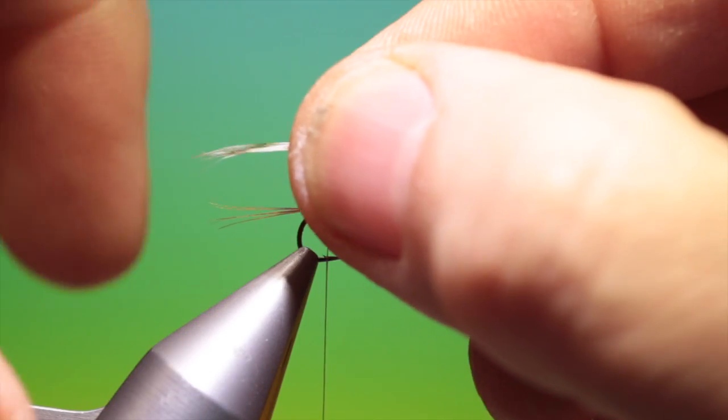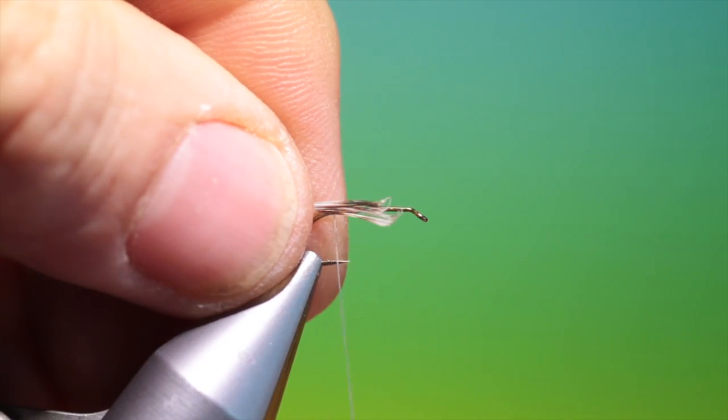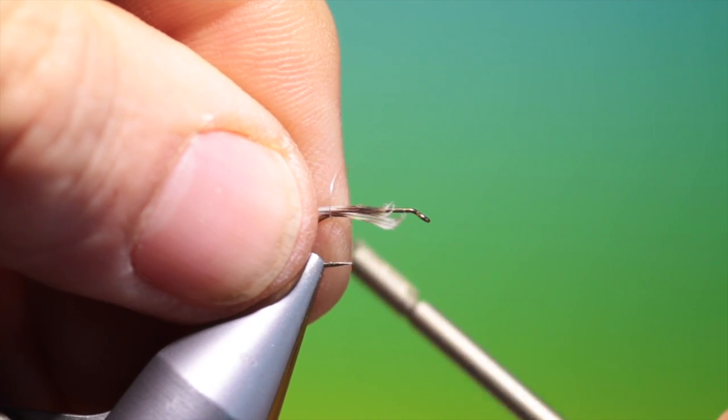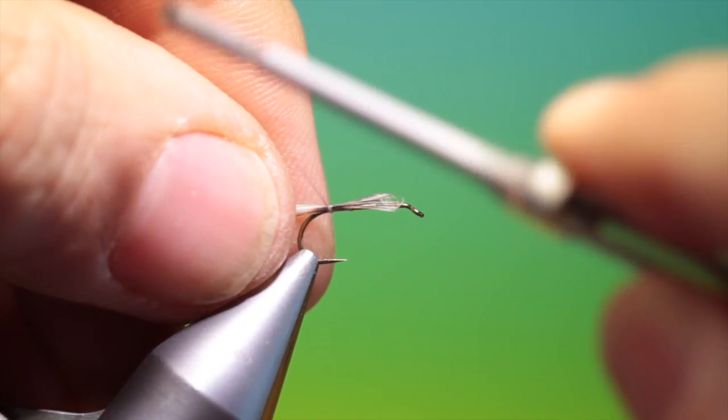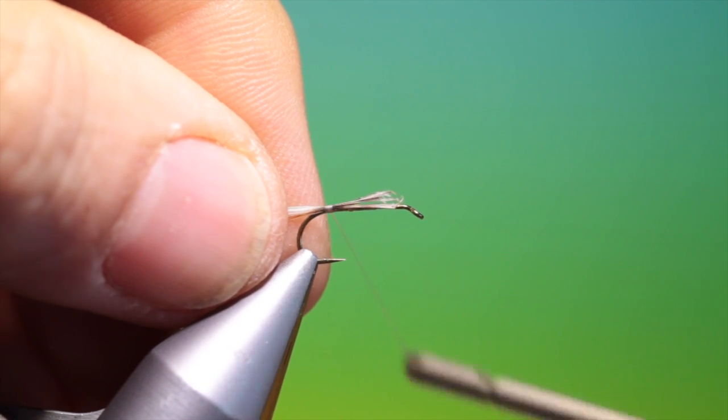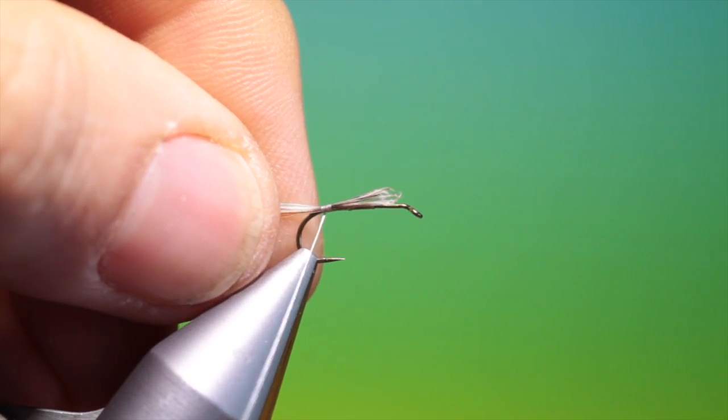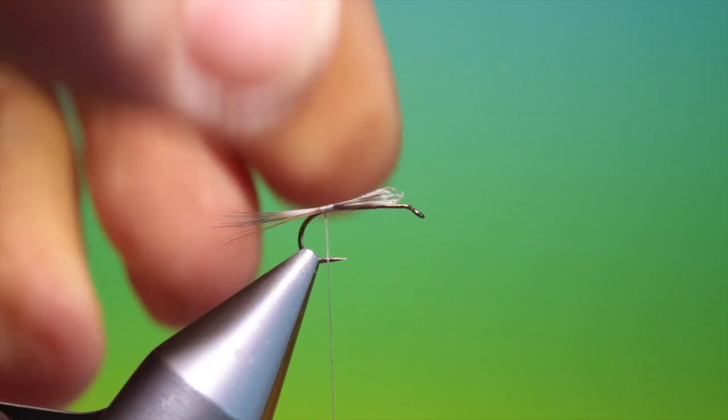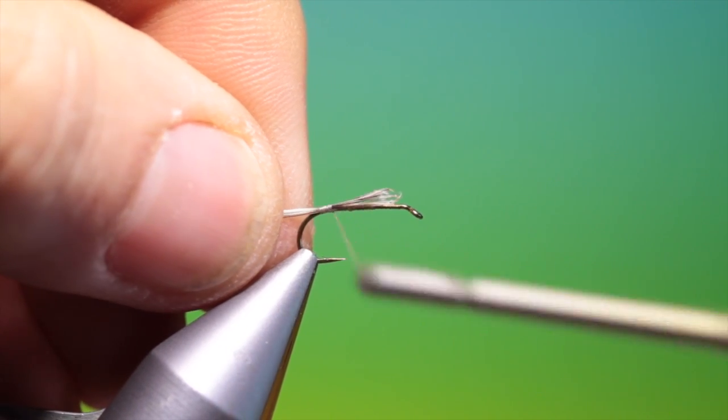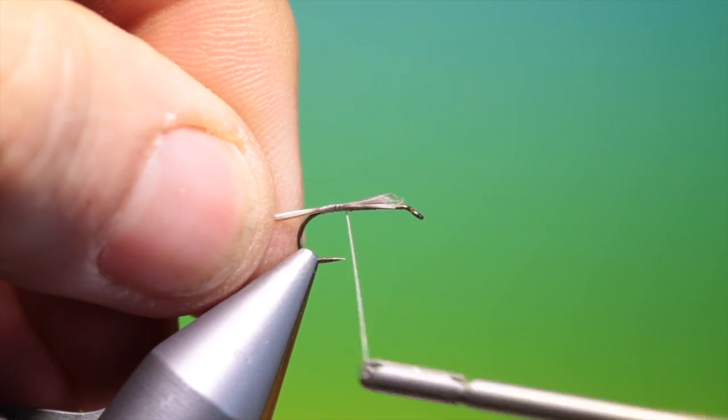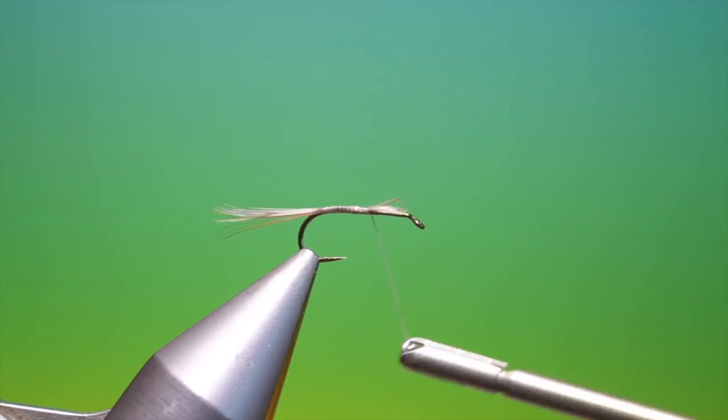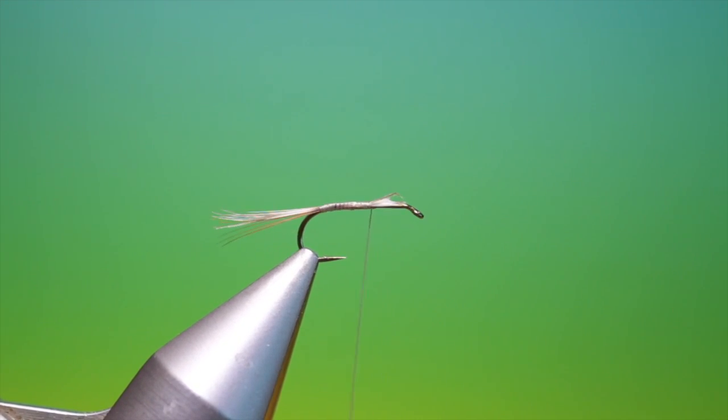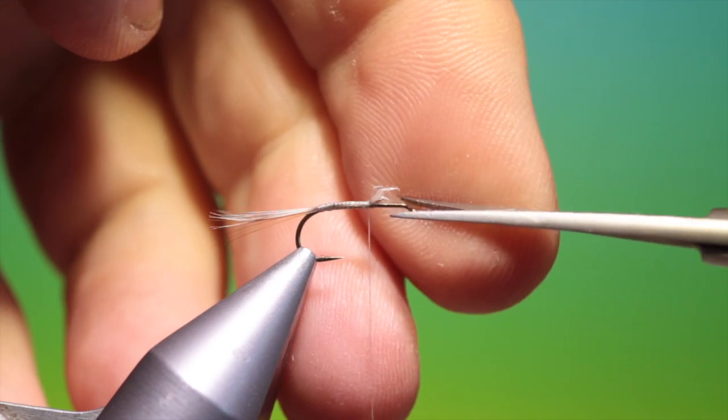Then we need a grizzle hackle, half a dozen. Put these on top of the brown. Let's go back a ways. We'll do this and then we'll go up towards the thorax. Let's get rid of those.